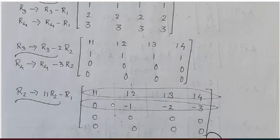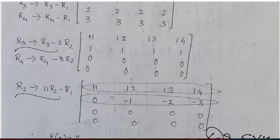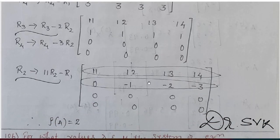Using that operation, I got the final matrix. I can see that these two are non-vanishing, non-zero rows. Therefore, the number of non-zero rows is 2, and hence the rank of the matrix is 2.